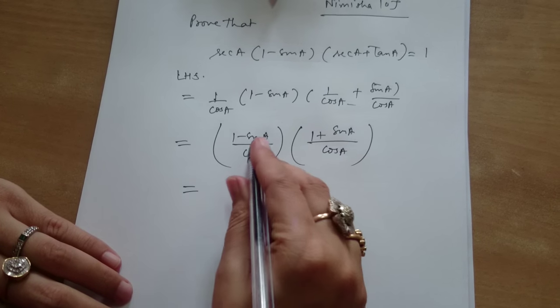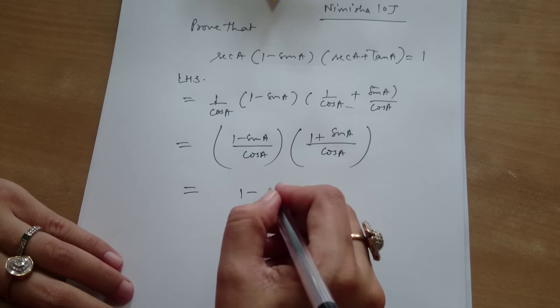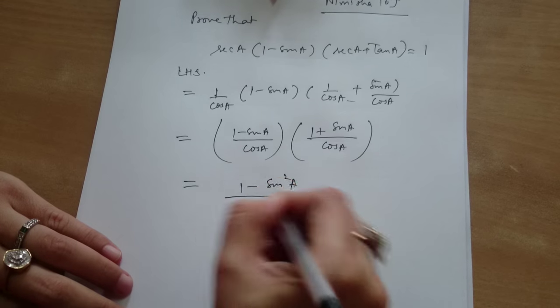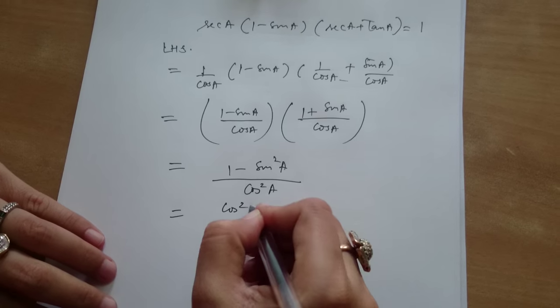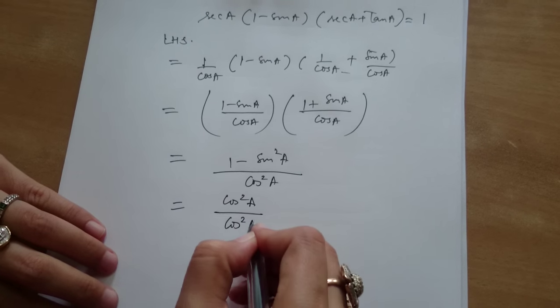So we get 1 minus sin a into 1 plus sin a will be 1 minus sin square a. Right. Upon cos square a. What is 1 minus sin square a? Cos square a. Cos square a upon cos square a.